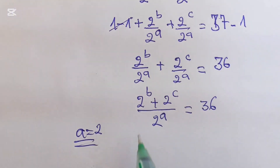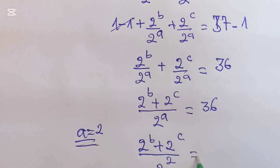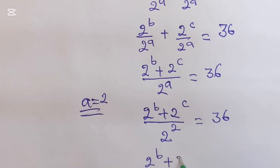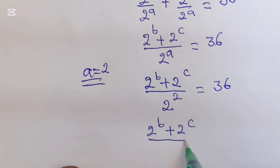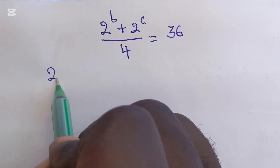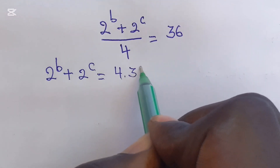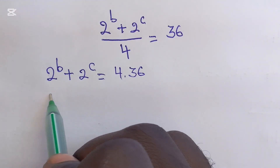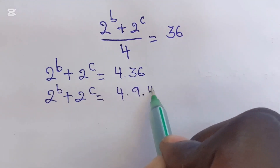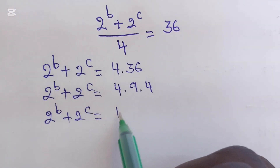Substituting A = 2, we get (2^B + 2^C) over 4 = 36, so 2^B + 2^C = 4 times 36 = 4 times 9 times 4 = 16 times 9 = 144.